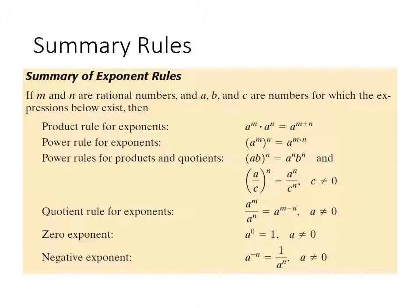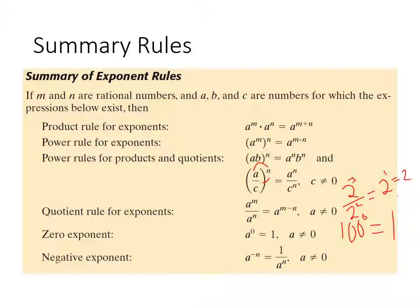Next are power rules for products and quotients. For the quotient power rule, if you have a number in the numerator and denominator, distribute the power to both — just be mindful that we don't have zero in the denominator. The quotient rule means if you're dividing two numbers with the same base but different exponents, subtract the exponents: two to the third over two squared becomes two to the one, or just two, because three minus two is one. The zero exponent rule: anything to the zero power equals one — so 100 to the zero power equals one. Last is the negative exponent rule: a negative exponent means the number belongs in the denominator rather than in the numerator.